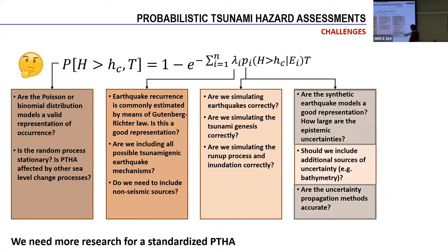In my PhD, I worked on two aspects. First, I developed a new synthetic earthquake model based on a random field to create synthetic earthquakes. Second, I focused on uncertainty propagation — given uncertainty in the earthquake or any other source, you need to propagate it to get the values of the conditional probability PI. To do that, you can use a Monte Carlo simulation, but since you are dealing with so many random dimensions, you need something more efficient. For that, we used what we call the stochastic reduced order model, which is an optimized Monte Carlo simulation that smartly selects samples through an optimization before running the physical simulations.